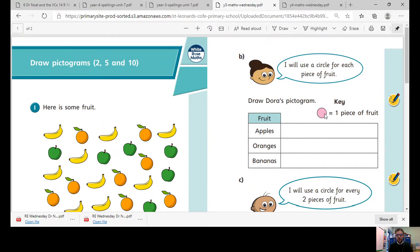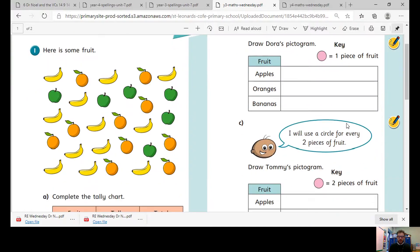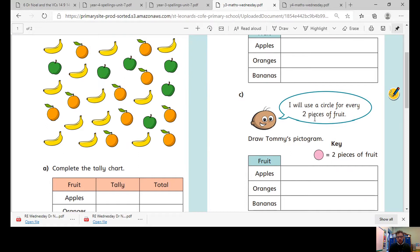It's not always the case. So all we've got to do is use our pictogram, so you've got to use your circle to represent the data. You find out how many apples, if each circle represents one apple, that's how many circles you would have to draw. Tommy's pictogram is a little different. He says I'll use a circle for every two pieces of fruit.